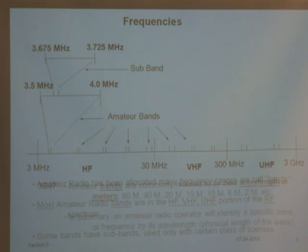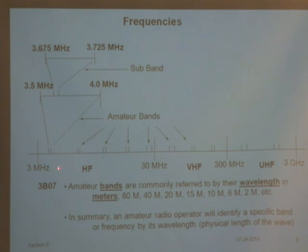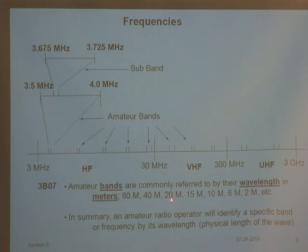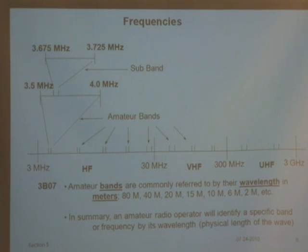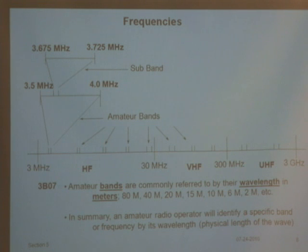When you divide one of these frequencies into 300, you get the wavelength in meters. Ham radio operators don't say 'I had a contact on 30 megahertz' — divide 30 into 300 and you get 10, so they say 'I talked to someone on the 10-meter band.' There's the 80-meter band, the 40-meter band, the 20-meter band. Every one of these bands is described by its wavelength, not its frequency. When someone asks about a 144-megahertz radio, we call it the 2-meter band — divide 150 into 300 and you get 2. We describe bands by their wavelengths, not by their frequencies.